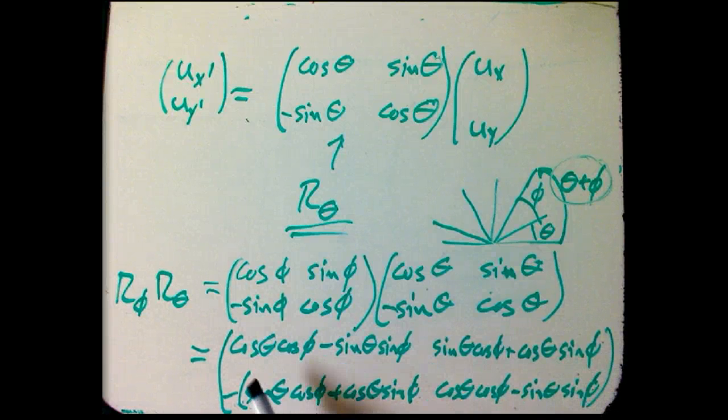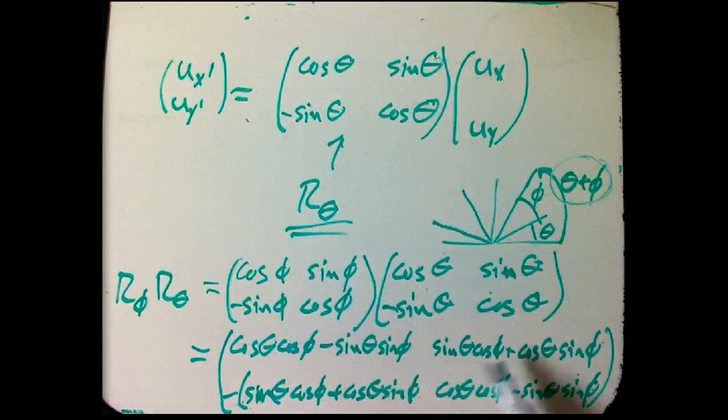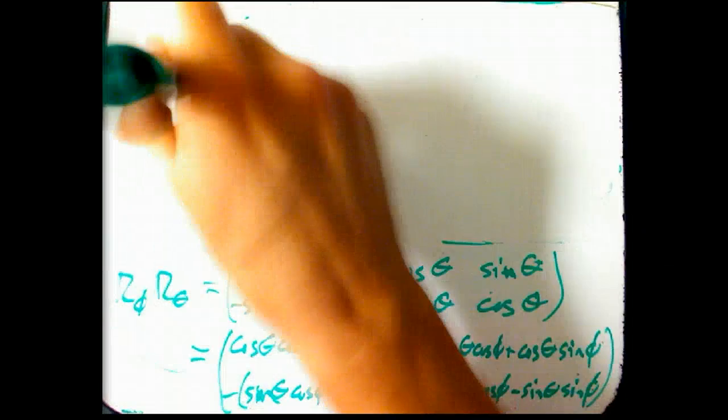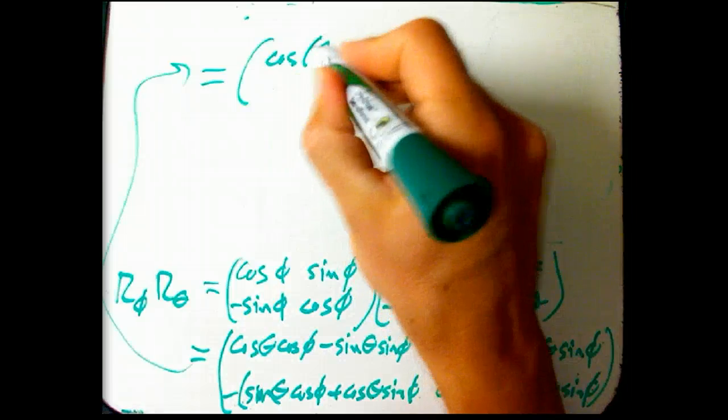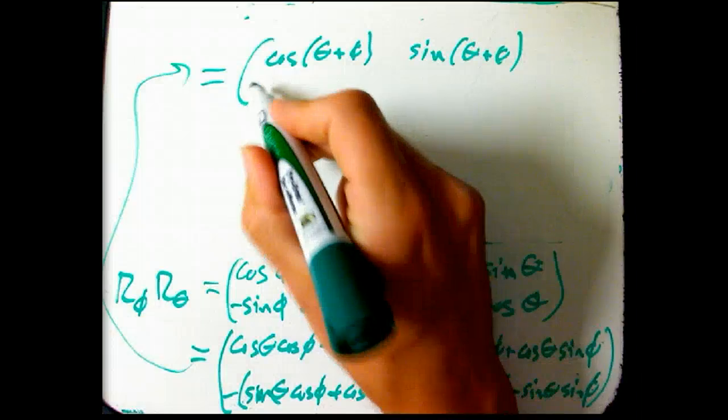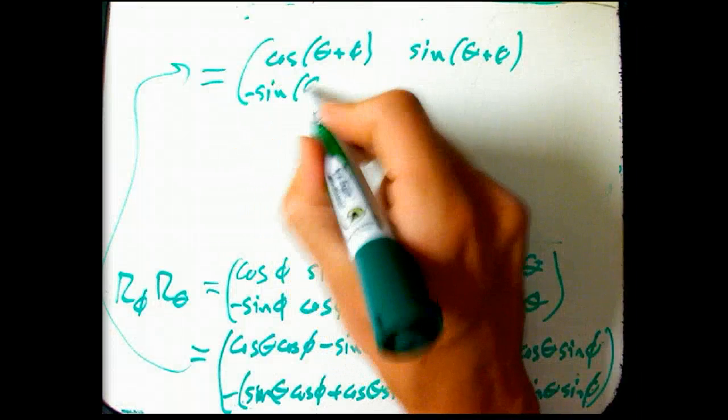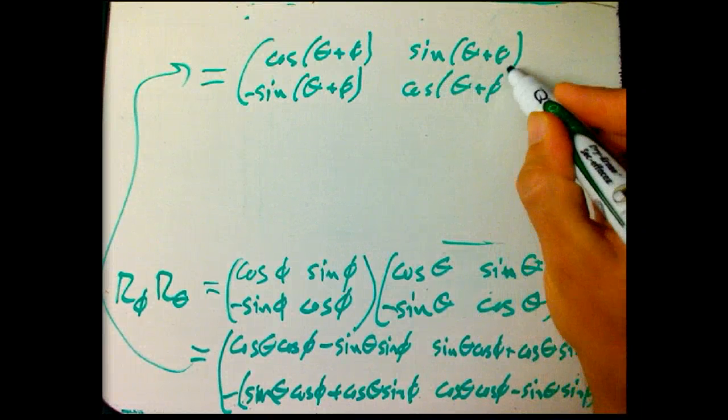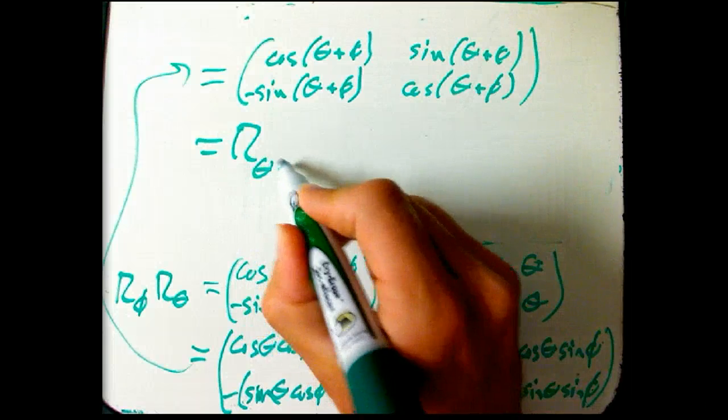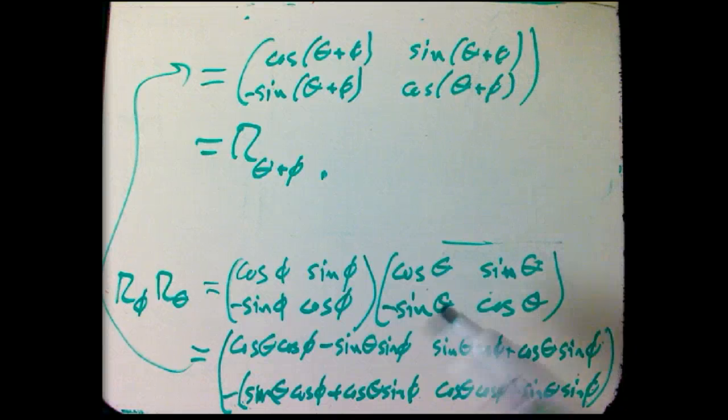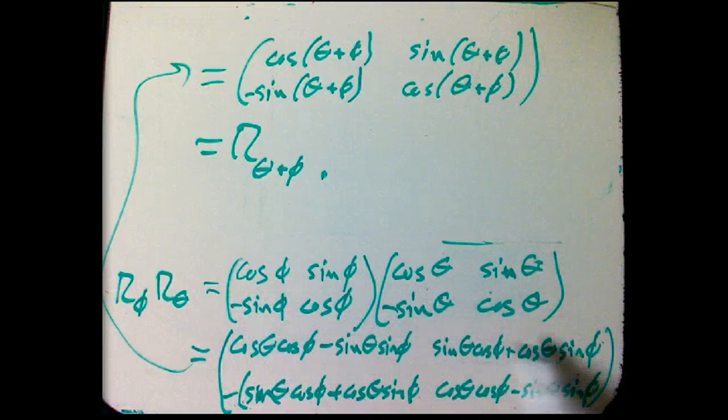And those should look very familiar. That's the addition formulas for cosine and sine. And so what we discover is that this is equal to cosine of theta plus phi, sine of theta plus phi, minus sine of theta plus phi, and cosine of theta plus phi. Which is, of course, R sub theta plus phi. That didn't have to happen unless these formulas worked out in this particular way.